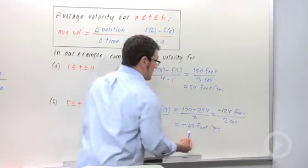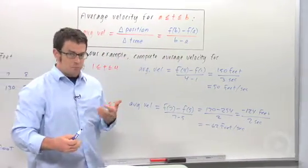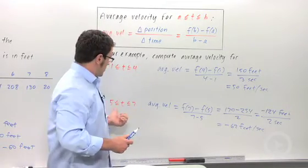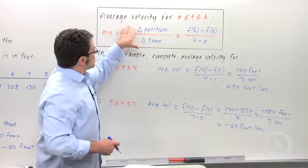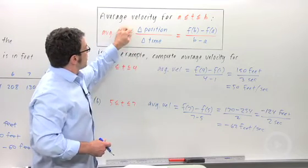Now what does it mean that the average velocity is negative? It just means that the pumpkin is probably on its way down on this interval of time. So, average velocity is change in position over change in time. And remember, change in position is final position minus initial position.